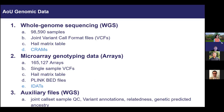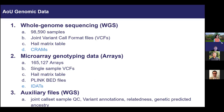The genome centers perform sequencing and genotyping, which means we provide two types of genomic data in the research workbench: whole genome sequencing data and microarray genotyping data. We provide common formats for these two data types — the CRAM/BAM formats, the Hail matrix table, and the PLINK files.